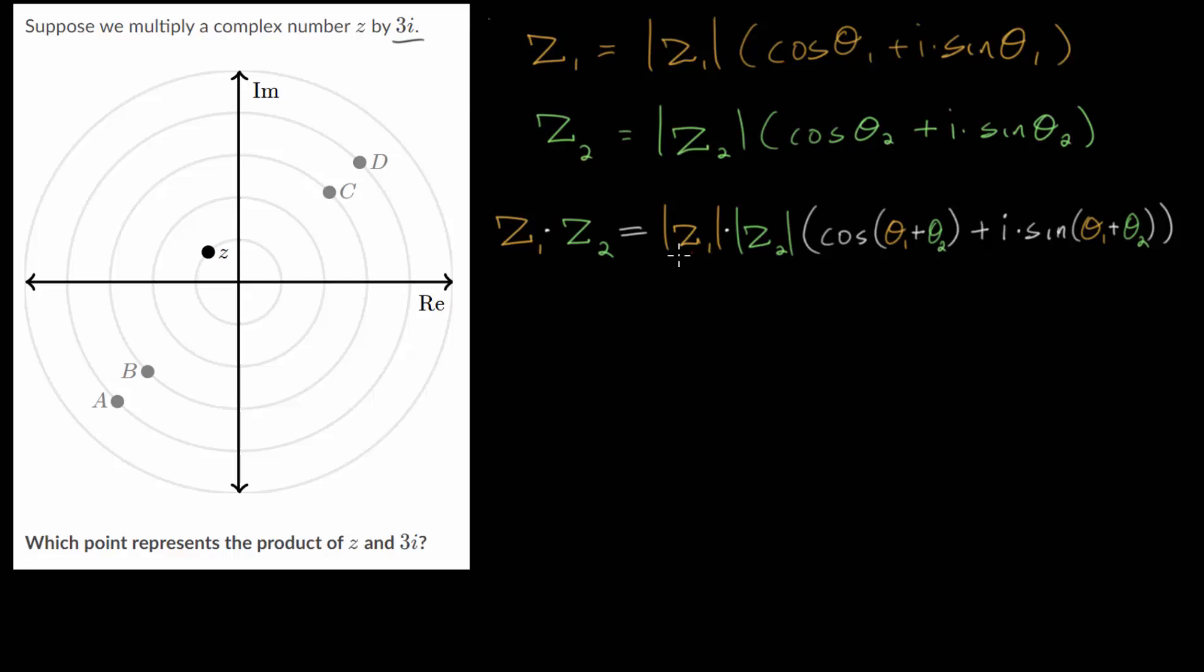Remember these angles are measured from the positive real axis. So the general idea when multiplying two complex numbers is that we multiply their magnitudes, their distance from the origin, and we add their angles.